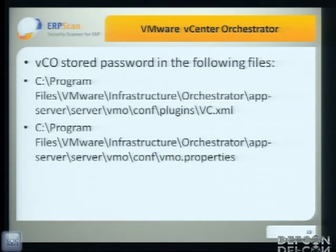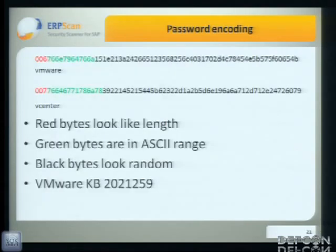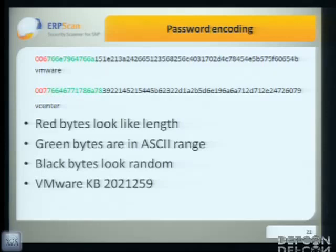We also found interesting files like vco.xml and vimeo.properties. This file looks like this — it has something that looks like a hash, but it's actually not a hash because it has an odd length. So I encoded a few passwords. As you can see, the first red bytes look like a length. The green bytes were always constant and are in ASCII range. And the black bytes, when you encode other passwords or the same password, were different every time.